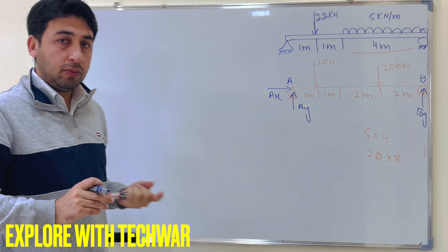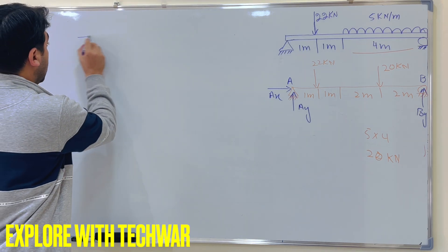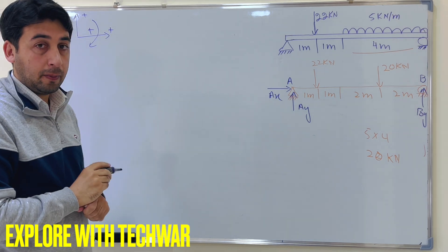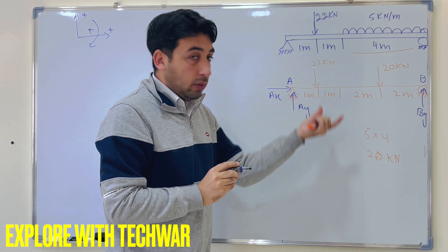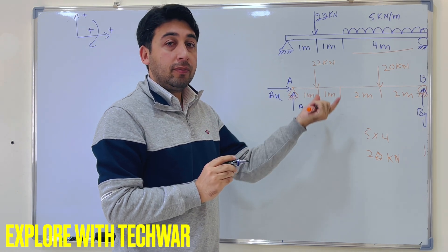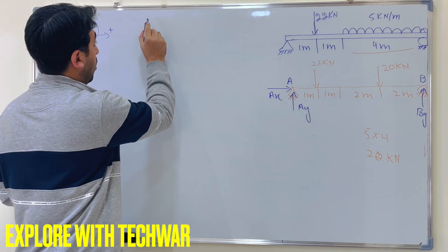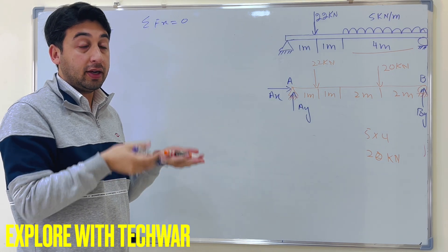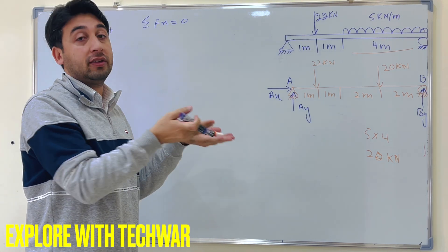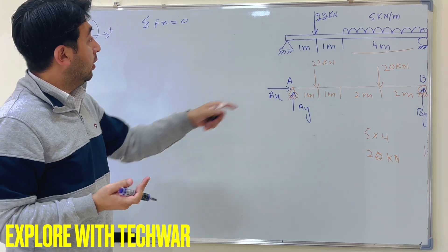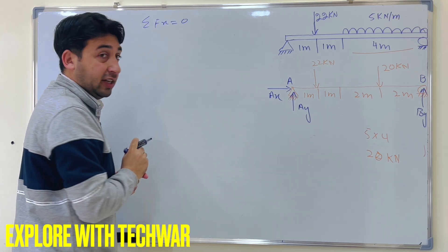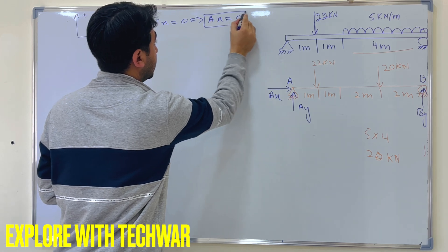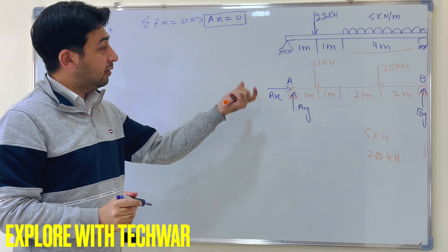We set our sign convention: rightward and upward are positive, and clockwise moment is positive. We consider the beam to be in equilibrium and apply the conditions of equilibrium. The sum of all forces in the X direction must equal zero. Since AX is the only force in the X direction, AX equals zero.